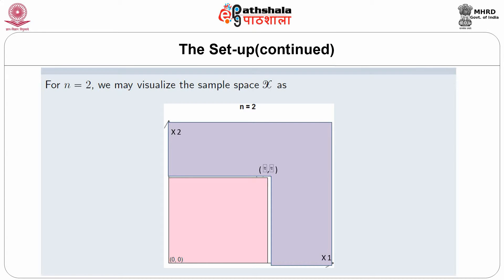Consider the figure for n=2, that is only X₁ and X₂ — we may visualize the sample space. This is a square where X₁ lies between 0 and θ, and X₂ lies between 0 and θ. The violet region is the sample space where X₁ lies between 0 to θ and X₂ lies between 0 to θ.